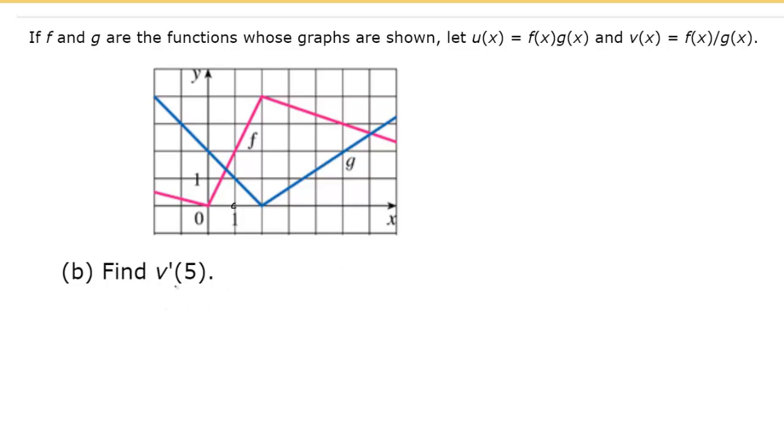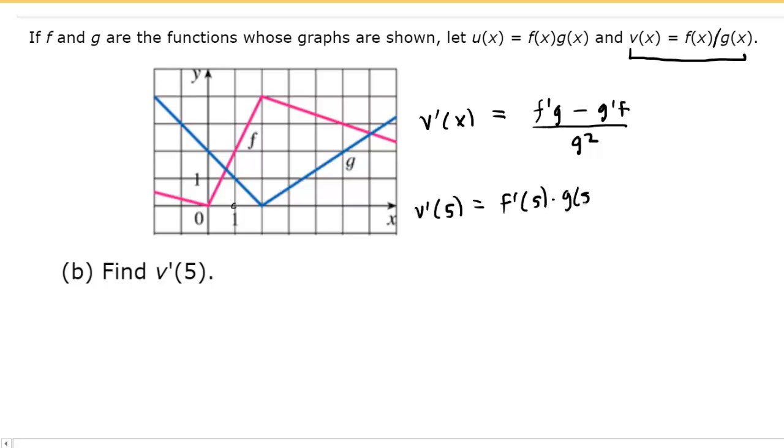In part B, we are asked to calculate v prime of 5, which is the derivative of the v function when x is equal to 5. The v function is given over here in the top right corner. We'll notice that we have a division sign here. So rather than using the product rule, we're going to have to use the quotient rule. And that would give us the derivative, v prime of x. For the quotient rule, I like to use the mnemonic fig minus gif divided by g squared. So that would mean that in order to calculate v prime of 5, we would simply have f prime of 5 multiplied by g of 5 minus g prime of 5 multiplied by f of 5, all divided by g of 5. And then don't forget that that whole quantity will be squared. So we just have to evaluate these individual quantities.